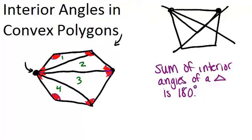So if I know that the sum of the interior angles for each triangle is 180, it means that the sum of the interior angles for the whole hexagon must be 180 times 4, because it's 180 for each of the four triangles. And 180 times 4 is 720.